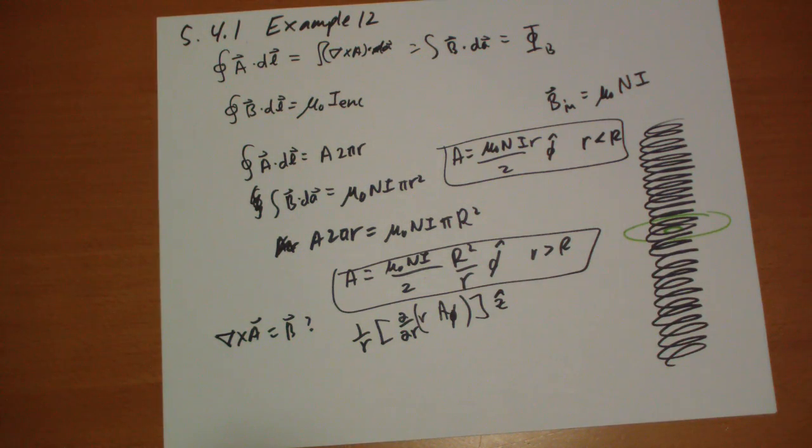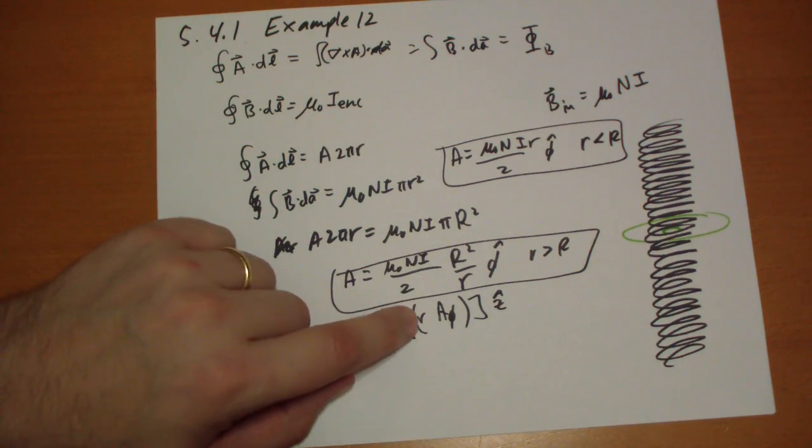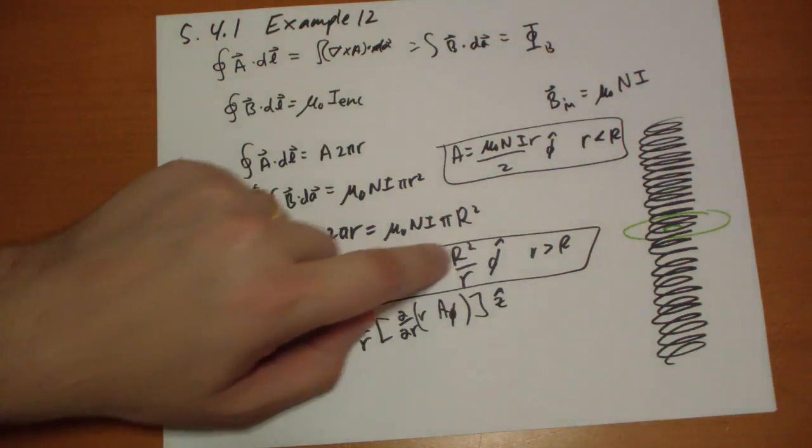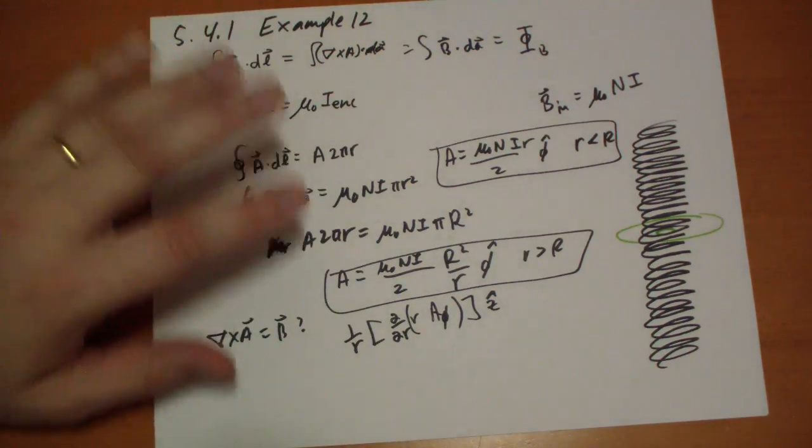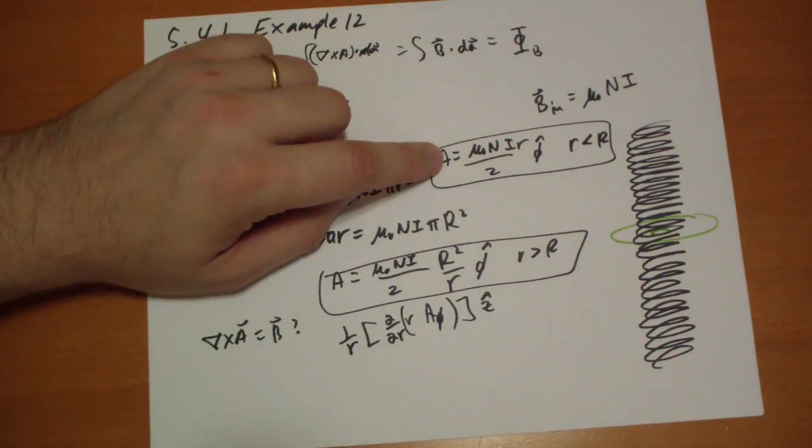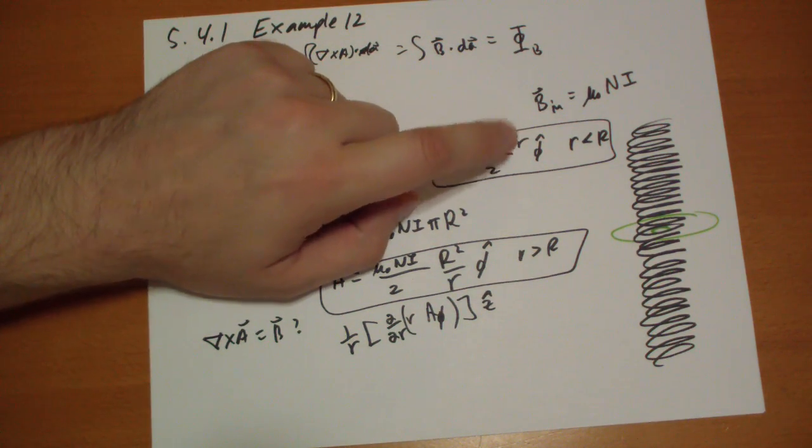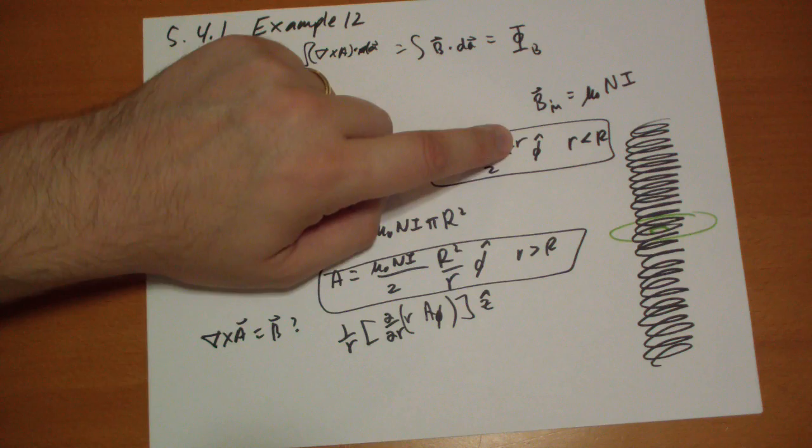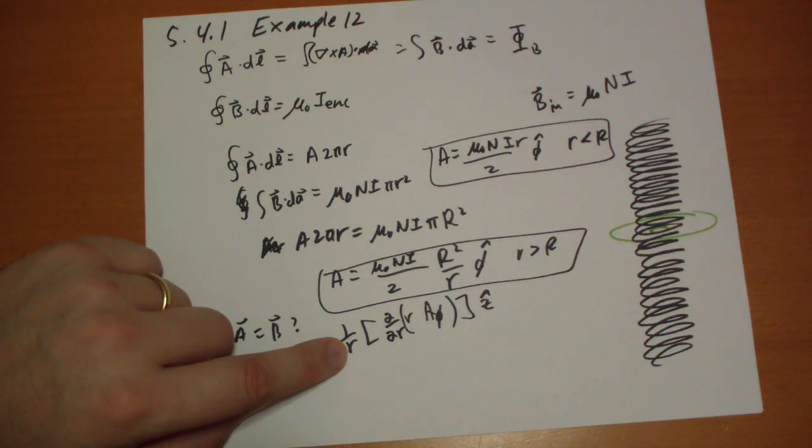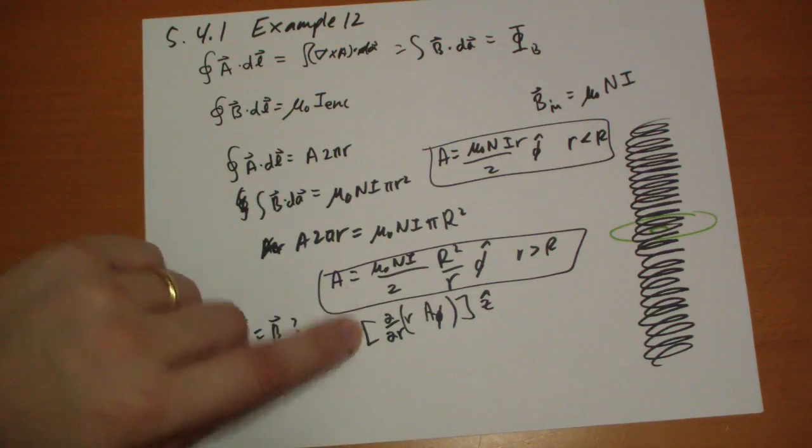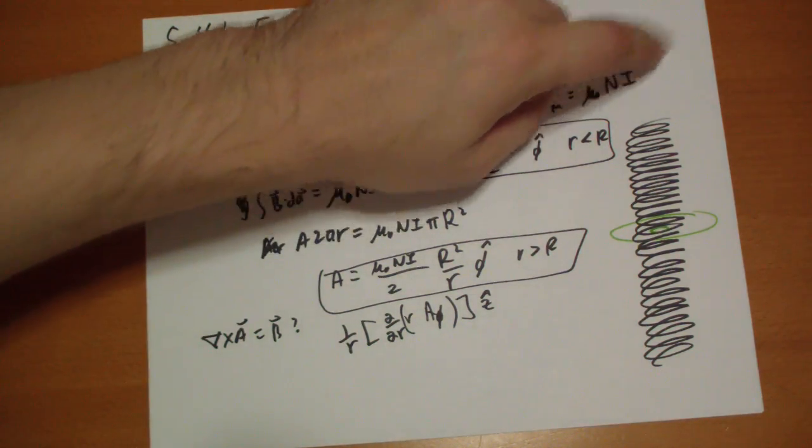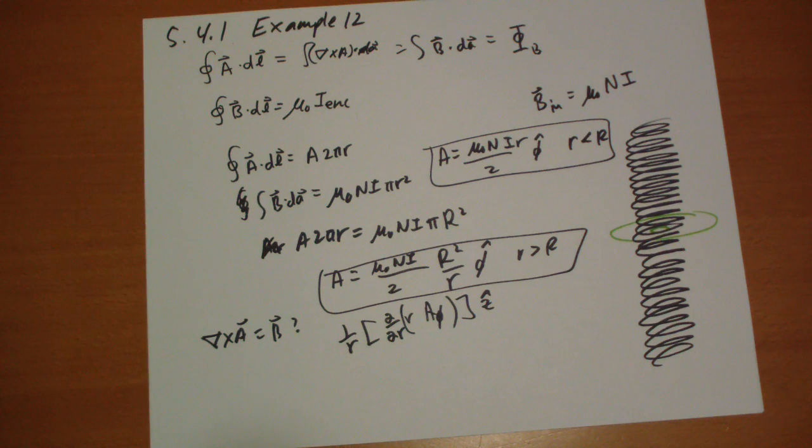Okay, so very quickly checking with that, seeing if we get our magnetic field back. So on the outside, r times this, well there's no r anymore, so you take the derivative with respect to r, that's zero. So no magnetic field on the outside, which is correct. On the inside we get r times this, we have an r squared. What's the derivative of that? It's just two r, so the twos cancel. We get mu naught ni over r. Oh, mu naught ni r divided by r. And then that gives you mu naught ni. So it gives you the stuff back. So it works.